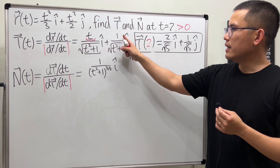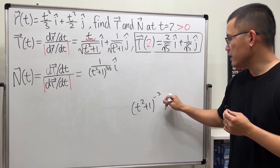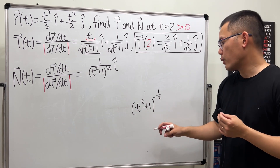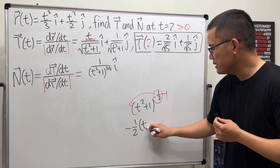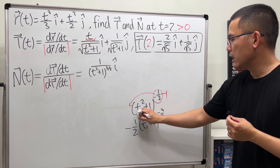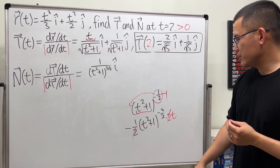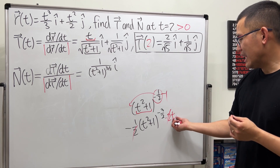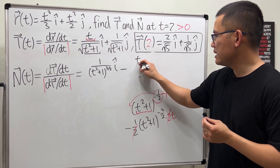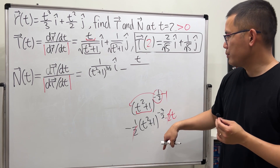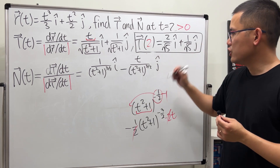Next, differentiate the j component, written as (t squared plus 1) to the negative 1/2 power. Using the power rule and chain rule: bring the exponent to the front, giving negative 1/2 times (t squared plus 1) to the negative 3/2 times 2t. The 2's cancel, leaving minus t over (t squared plus 1) to the 3/2 power for the j component.